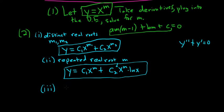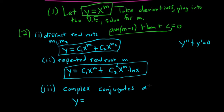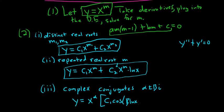The last case is if you have complex conjugates, alpha plus or minus beta i. In this case the formula is y equals x to the alpha times the quantity c1 cosine(beta ln x) plus c2 sine(beta ln x). That's what you get with complex conjugates.